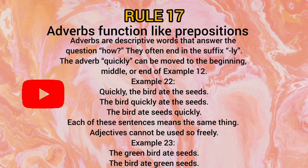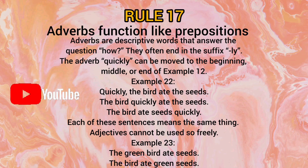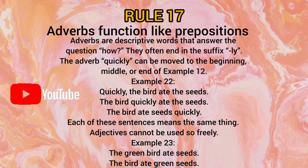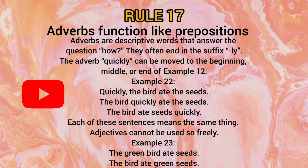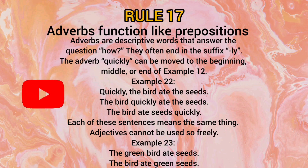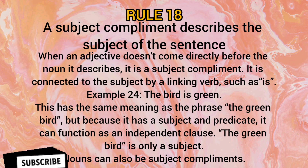Rule number 17: Adverbs function like prepositions. Adverbs are descriptive words that answer the question 'how.' Generally, adverbs use the suffix '-ly,' like 'quickly' from 'quick.' Adverbs can be moved to the beginning, middle, or end of a sentence — for example, 'Quickly, the bird ate seeds' or 'The bird ate seeds quickly' — each means the same thing. Adjectives, however, cannot be used so freely; moving them changes the meaning, as in 'The green bird ate seeds' versus 'The bird ate green seeds.'